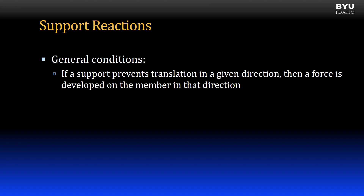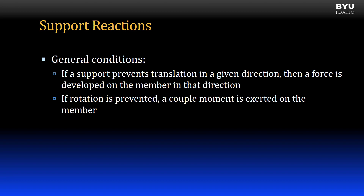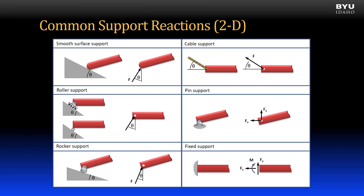For example, if your body weight pushes vertically downward against the supporting ground, then the ground pushes vertically upward with an equal load. Likewise, if a rotation is prevented, a couple moment is exerted on the member, acting to resist rotation. Here is a table of the most common supports and the reactions they produce on a body. Tables like this are a useful resource as you get familiar with supports and reactions. Eventually, you should either memorize these or learn how to determine what reactions a support causes based on the principles we just discussed.